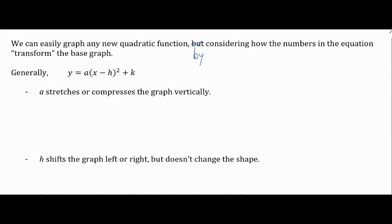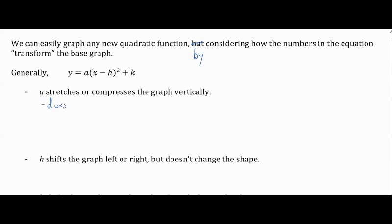By considering how the numbers in the equations transform that base graph. Here are the ones we're going to look at: A, H, and K. A is always the number that's out in front. Your job over the next couple of days is to get used to finding the A value in different equations and understanding what it looks like and what it means. A will stretch the graph vertically or compress it vertically. It's really important to know that it does not move the vertex.